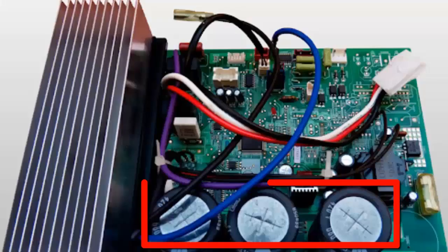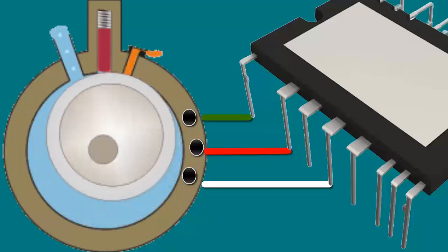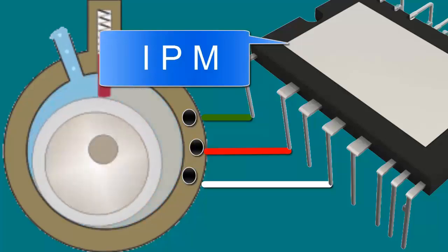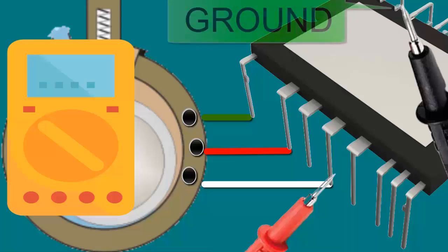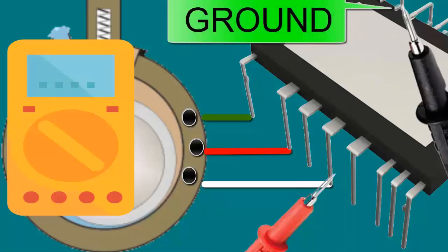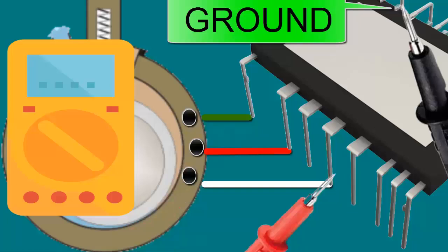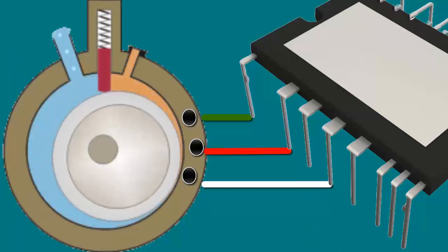To check for faults in the IPM module, first disconnect the unit's power supply. Remember that electrolytic capacitors can store energy. The most common test is to perform a visual inspection for faults and use the multimeter on the high resistance scale, placing the negative probe on the IPM module circuit ground and the positive probe on any of the IPM module terminals that go to the compressor. You should get an infinite reading, indicating no short circuits.